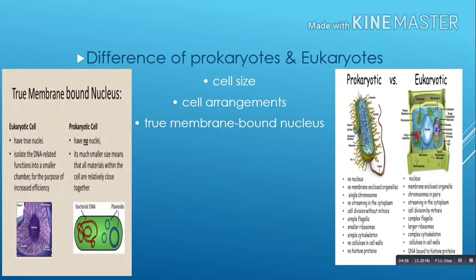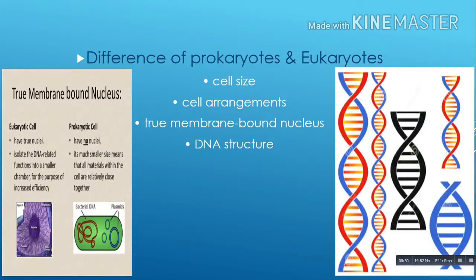In contrast, the smaller prokaryotic cells have no nucleus. The materials are already fairly close to each other, and there is only a nucleoid, which is the central open region of the cell where the DNA is located. The DNA structure: eukaryotic DNA is linear and complex with packaging proteins called histones, before organization into a number of chromosomes. Prokaryotic DNA is circular and is neither associated with histones nor organized into chromosomes.